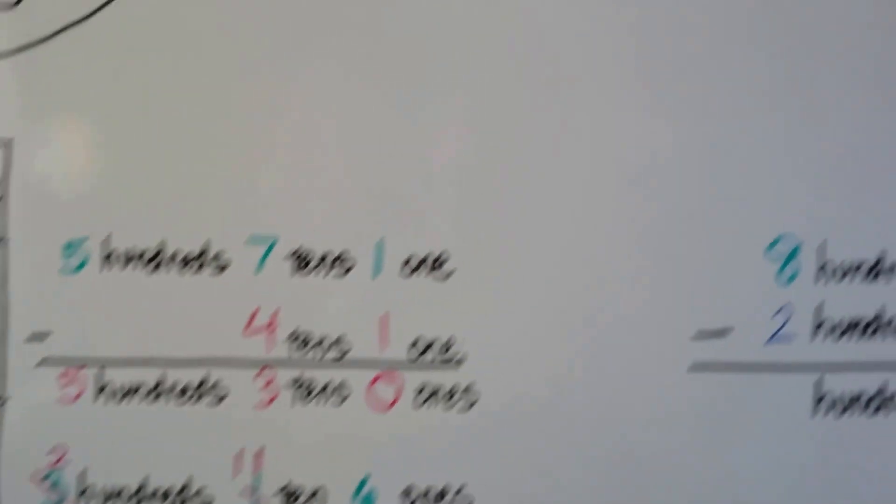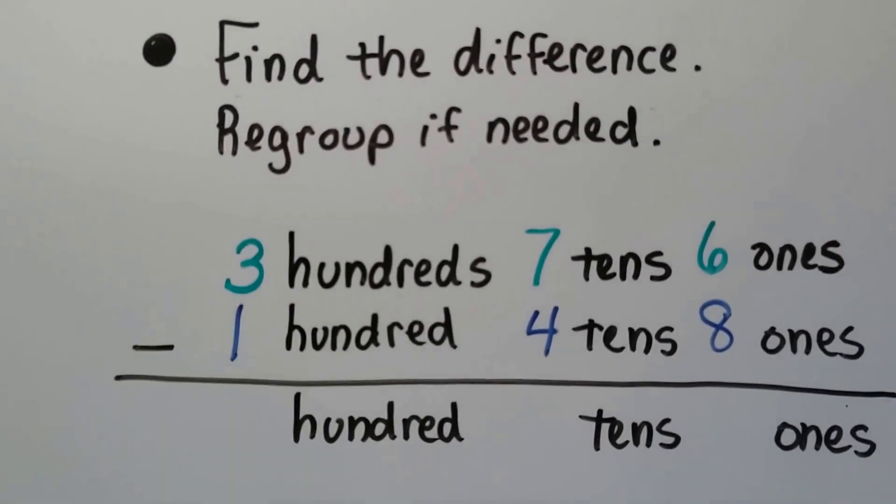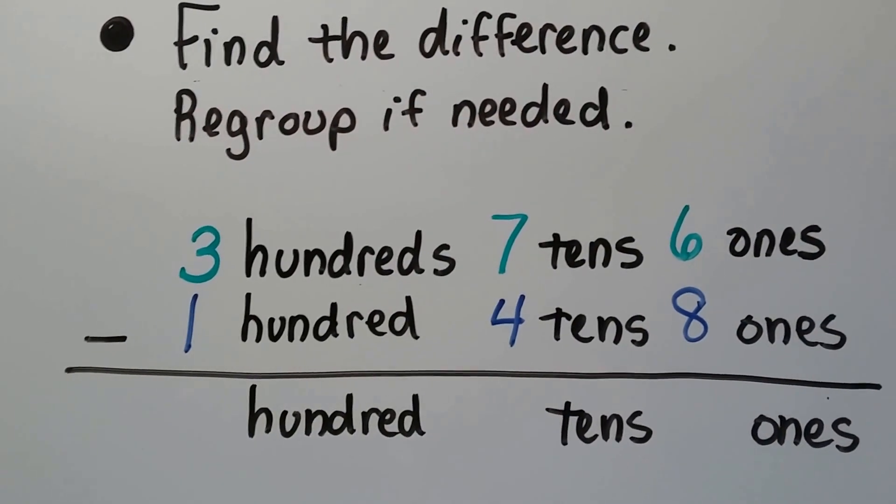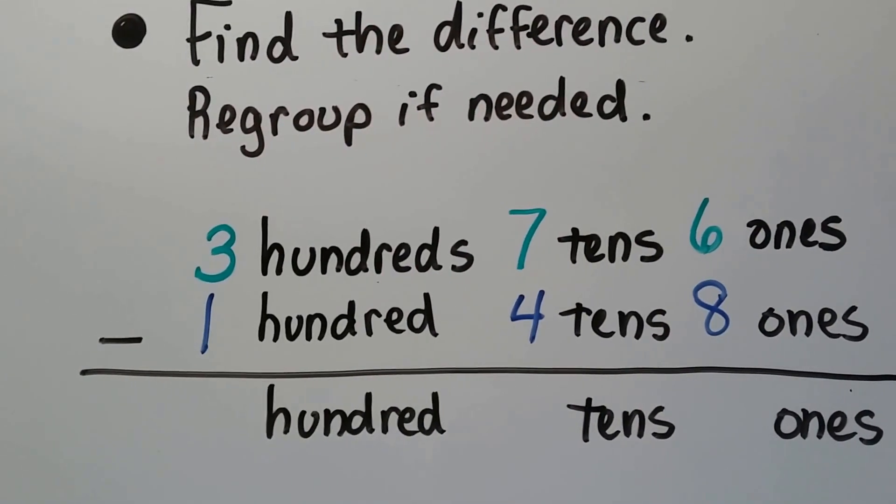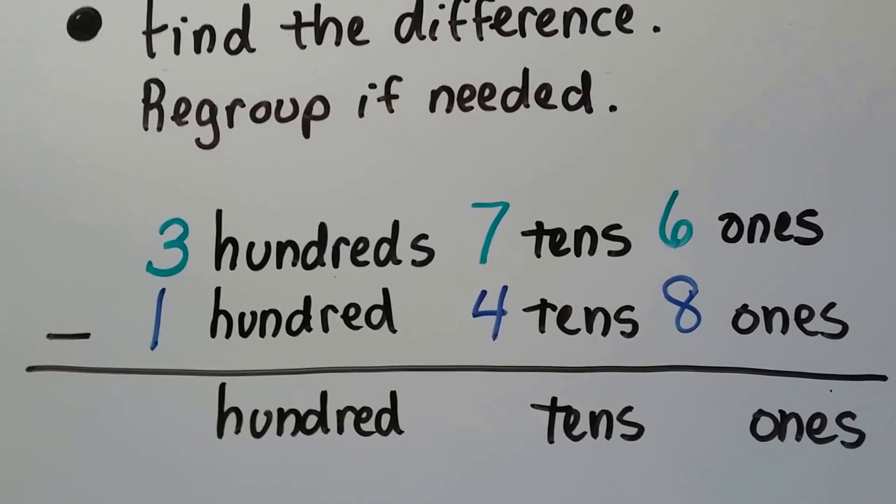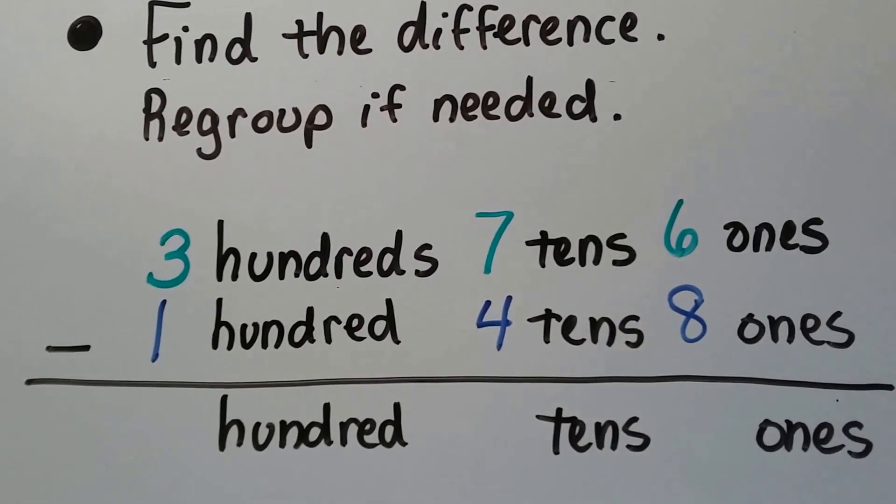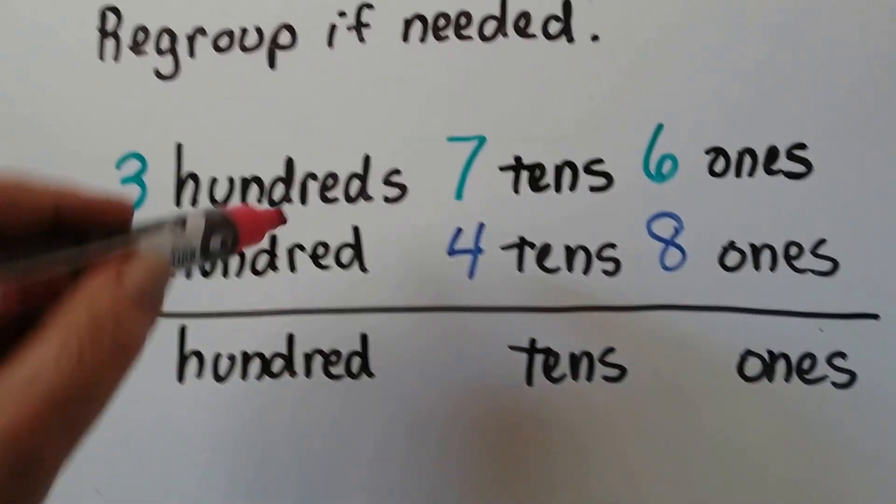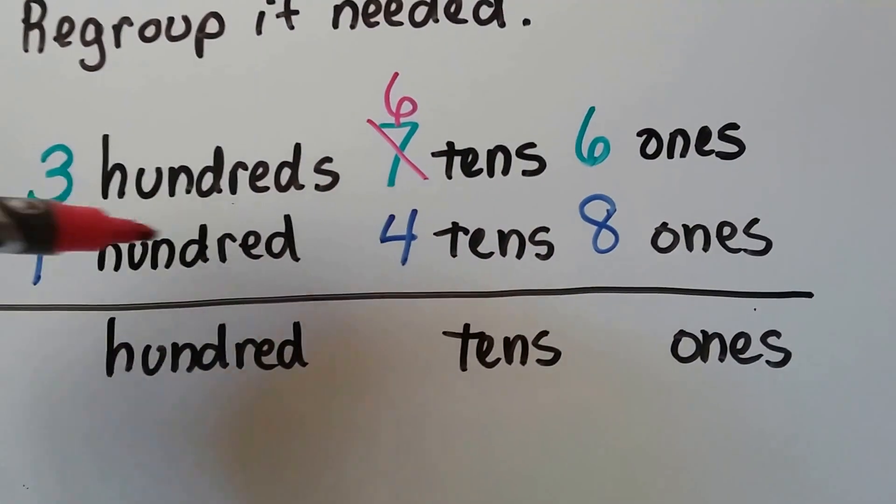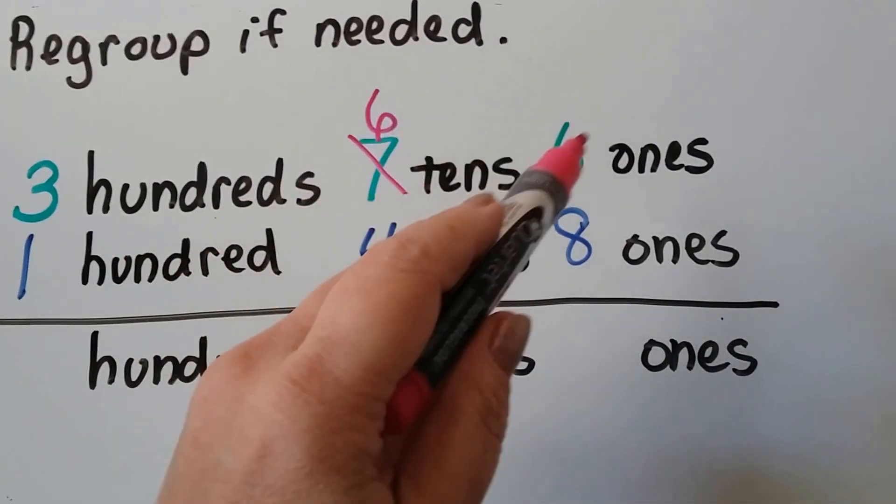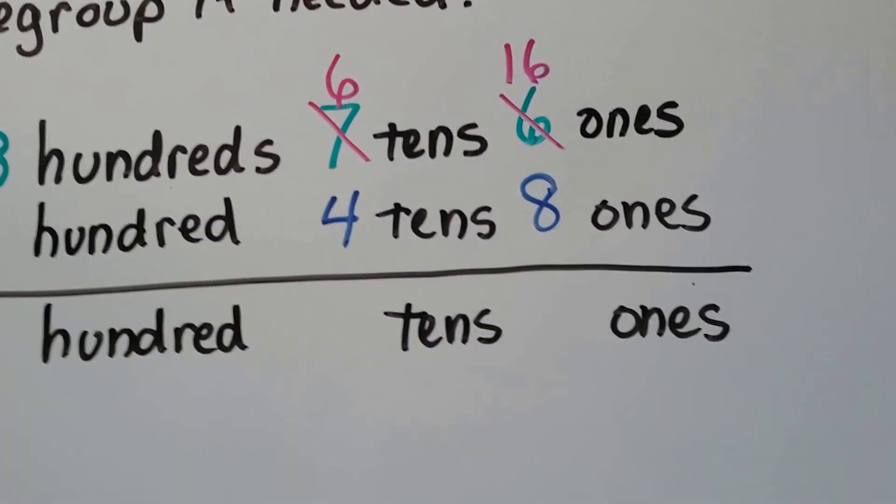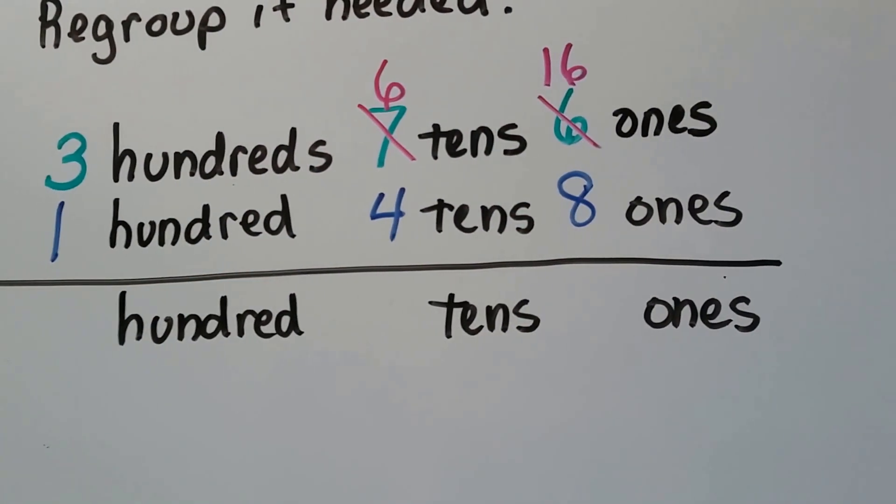So let's see if we can find the difference and regroup if necessary. We have 3 hundreds, 7 tens, and 6 ones as our minuend. And we have 1 hundred, 4 tens, and 8 ones as our subtrahend. So we're going to start with the ones place. We have 6 ones and we need to take away 8 ones. Ah, we're going to have to regroup, aren't we? Because the 8 is bigger. The subtrahend is bigger. So we're going to cross this out and instead of it being 7 tens, it's going to be 6 tens. And we're going to give that 10 to the ones place. So now we don't have 6 ones anymore, we have 16 ones.